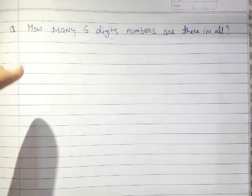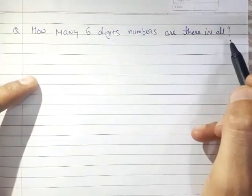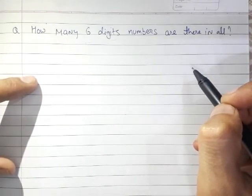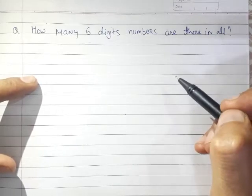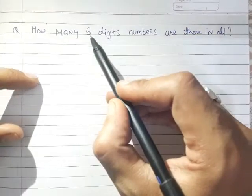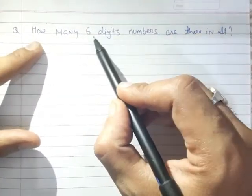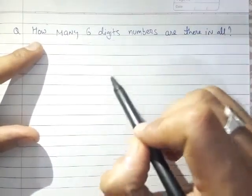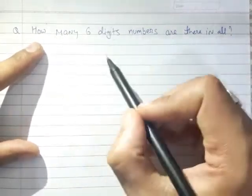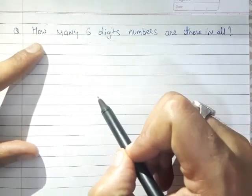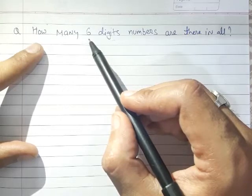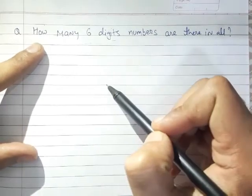The question is: how many six digit numbers are there in all? To solve such questions where you are asked about n-digit numbers — for example, how many two digit numbers are there, how many three digit numbers are there, or how many 15 digit numbers are there — we use one specific formula.